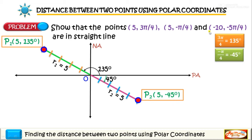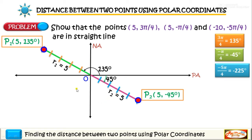The last point to locate is point three. Theta three is -5π/4, which is in radians. Converting to degrees: since π is 180°, multiplying by -5 gives -900° divided by 4, equal to -225°. Since theta three is -225°, we measure that in a clockwise direction from the positive polar axis, giving us -225°.